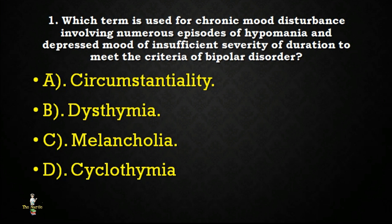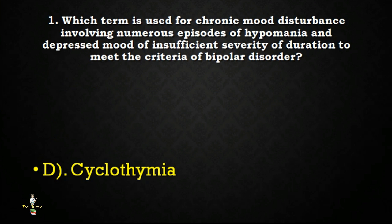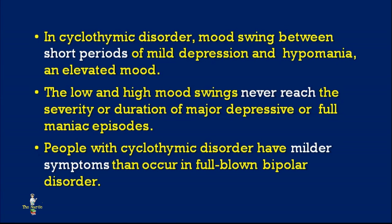First question: which term is used for chronic mood disturbances involving numerous episodes of hypomania and depressed mood of insufficient severity or duration to meet the criteria of bipolar disorder? Options: circumstantiality, dysthymia, melancholia, cyclothymia. Correct answer is cyclothymia. In cyclothymic disorder, mood swings between short periods of mild depression and hypomania and elevated mood.